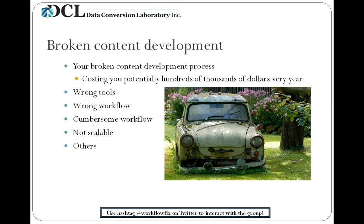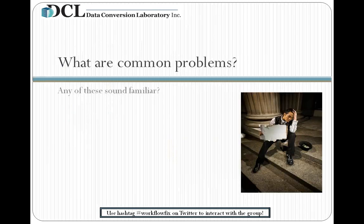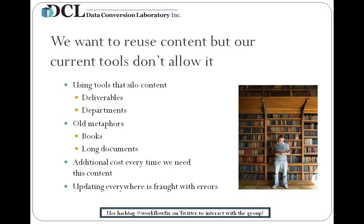You get this feeling things could be done better, and if you're a numbers cruncher, you're probably aware the way you're doing it could be costing you thousands or hundreds of thousands of dollars a year. But who wants to jump on their horse and ride off in all directions making changes? What you've got is kind of working, albeit maybe not well. Today we're going to talk about indicators that your system may be broken.